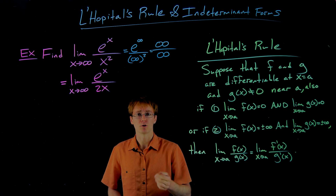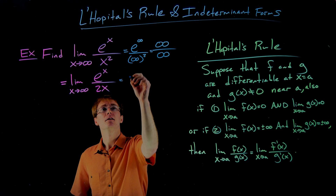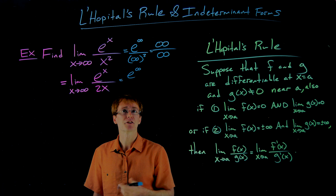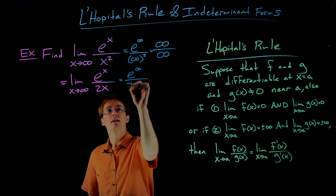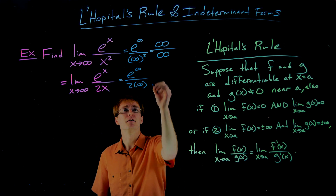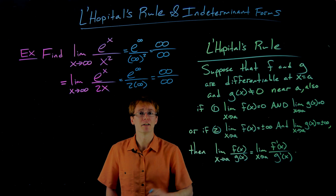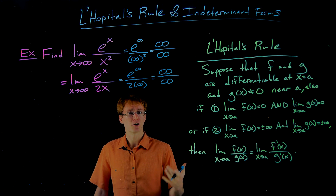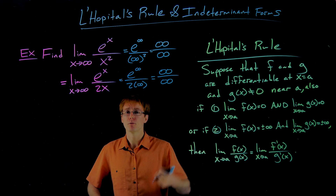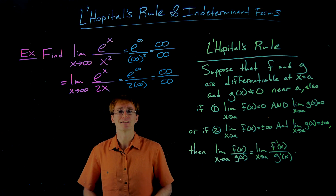Now we try direct substitution again. The numerator gives us e to the infinity, and the denominator gives us 2 times infinity. We encounter the indeterminate quotient infinity over infinity again. But when we run into this indeterminate form again after one application of L'Hôpital's rule, we don't stop and give up. We just apply L'Hôpital's rule again. We can keep applying it until the limit figures itself out.